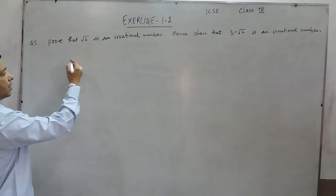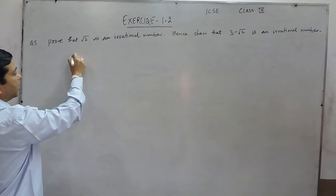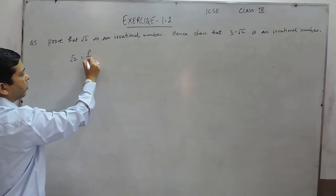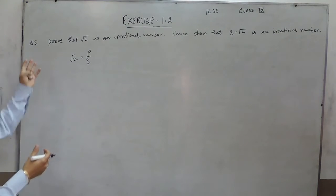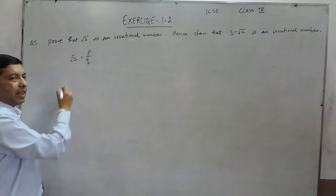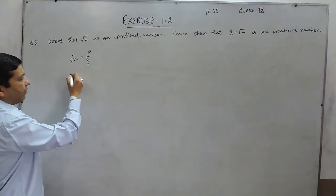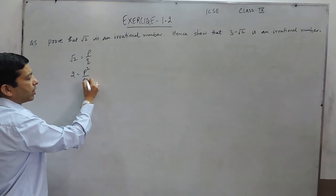Now the most important thing is, again we assume as we have in the first two questions, √2 as p upon q, and further solve the question as we have solved question number 4. Now instead of 11 or 5, if we multiply it by 2 here, we can say squaring both sides: 2 = p²/q², where p² = 2q².